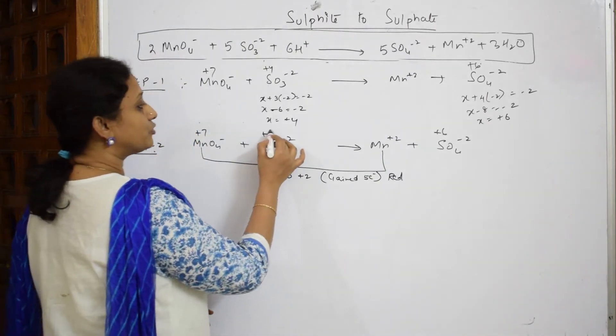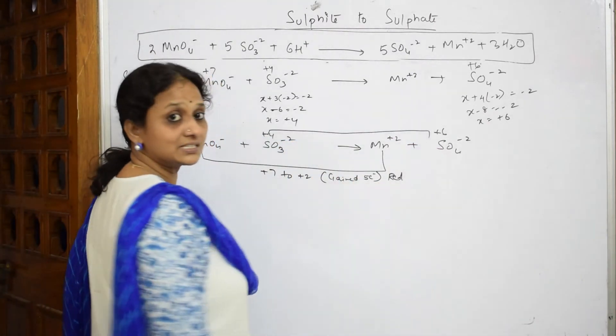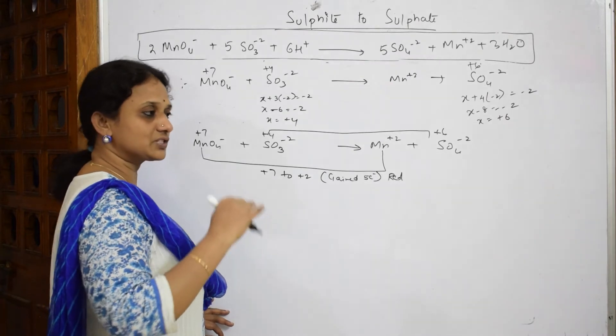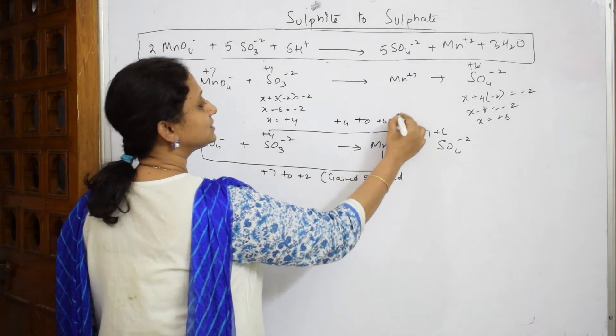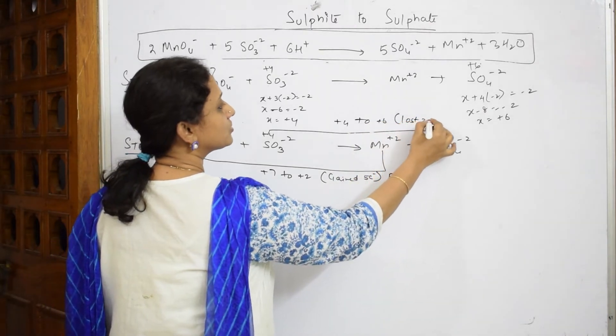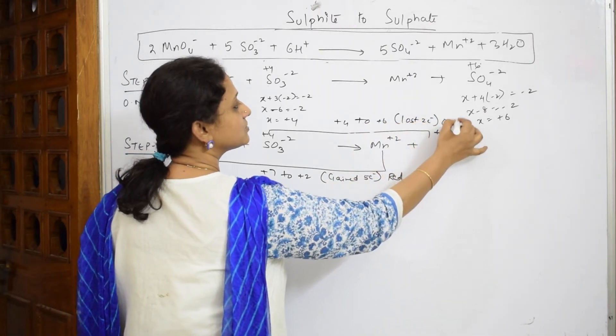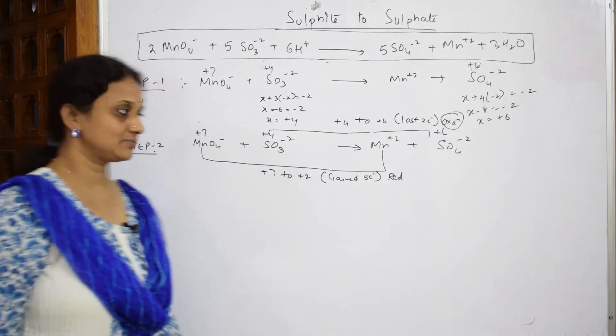Now this one from plus 4 it is going to plus 6. It has lost 2 electrons. From plus 4 to plus 6 it has lost 2 electrons, and it is oxidation. Loss of electrons is oxidation.